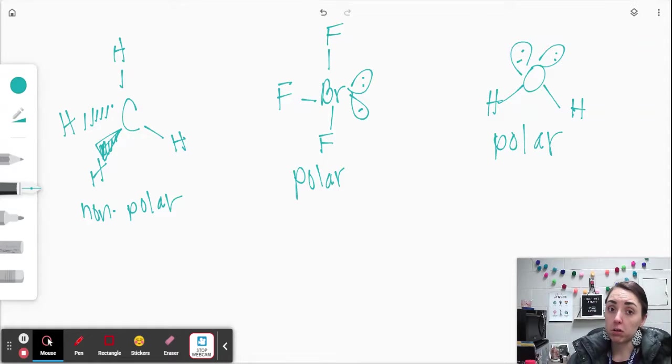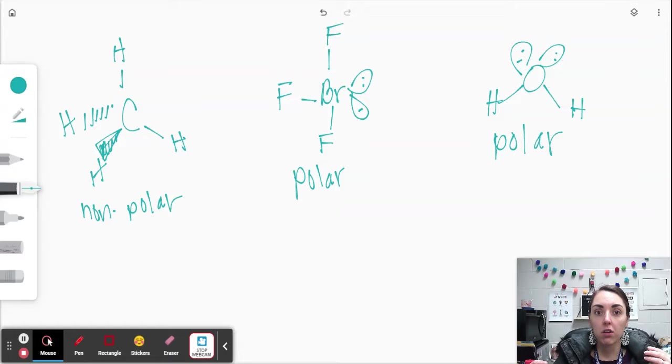So if you can get to the point where you can call it polar or nonpolar, then determining the IMAs is pretty easy from there. Intermolecular attraction - inter means between, molecular - so attractions between molecules. Molecules either have strong attractions or weak attractions, and that's based on this positive and negative opposites attract deal.